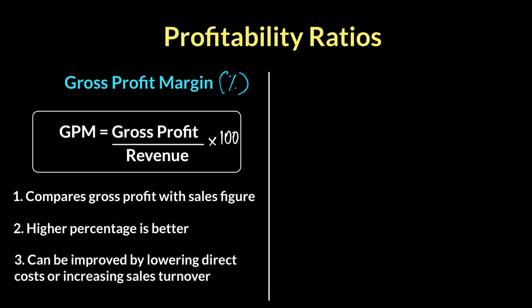There are two ways to improve gross profit margin, and this is a question often asked in exams. Either you reduce your costs — if it costs you less, you have more profit remaining — or you increase your turnover by selling more, which generates more profit. Of course, we're talking about direct costs here, because from the income statement, only direct costs have been deducted by the time we calculate gross profit. So two ways: reduce direct costs or increase revenue. A higher percentage is always preferred.